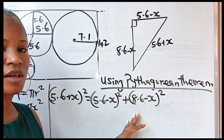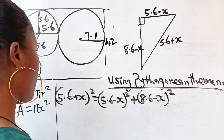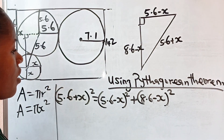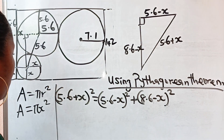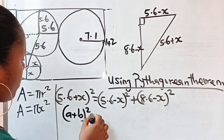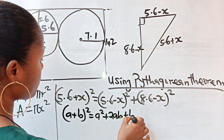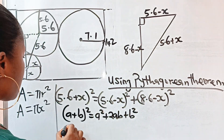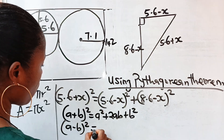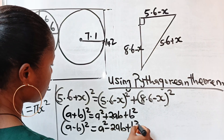I'm going to make use of my calculator in solving this to save time. Recall that (a + b)² = a² + 2ab + b², and (a − b)² = a² − 2ab + b².